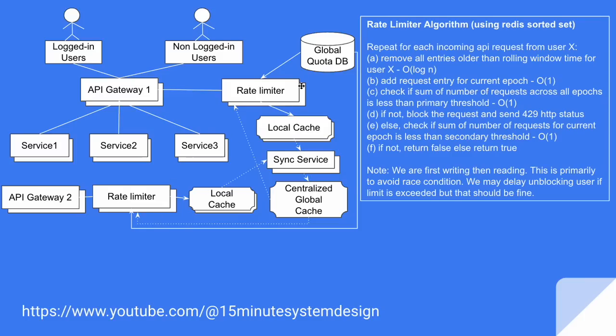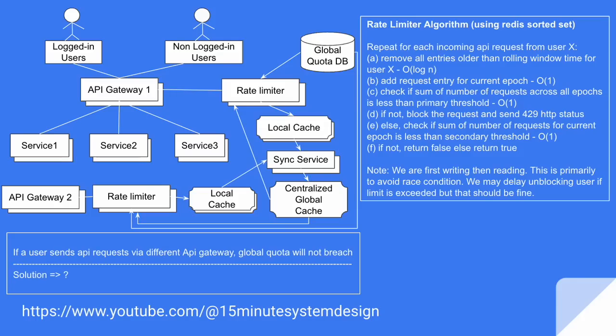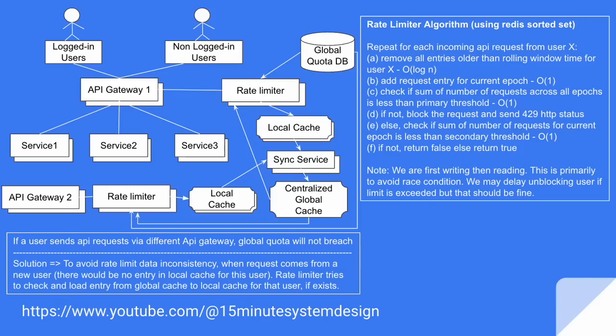Both rate limiters will load the one-time quota into local cache. The local cache will be pulled by the sync service, which will push it to the centralized global cache. The rate limiter will also keep pulling data from the centralized global cache for all users where there is no entry in the local cache. Whenever a request comes from a new user with no local cache entry, the rate limiter checks and loads that user's entry from the global cache to the local cache if it exists, ensuring the global policy is being honored.